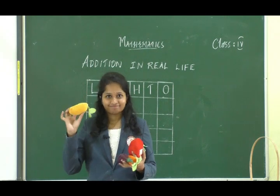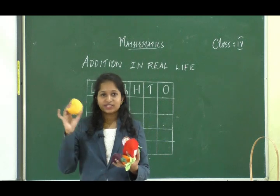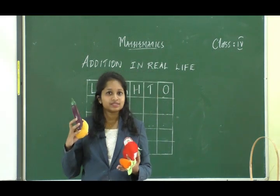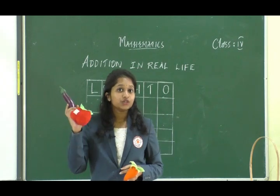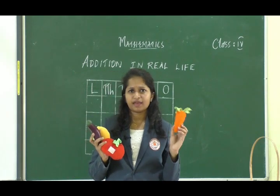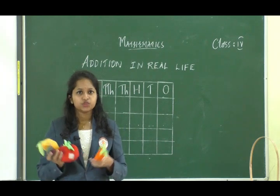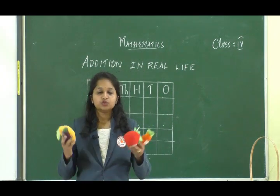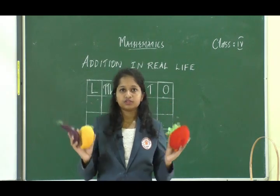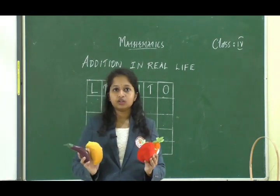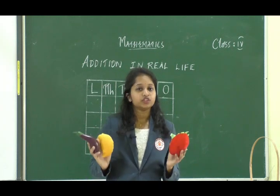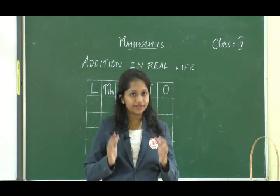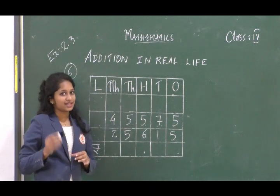Let us learn addition with some real life examples. For example, 1 kg mango costs rupees 30, 1 kg brinjal is rupees 20, 1 kg tomato is rupees 30, and 1 kg carrot is rupees 20. Now find the total cost for all these. You would add all the values and you get 100 rupees in total.